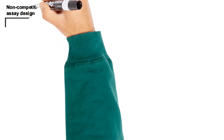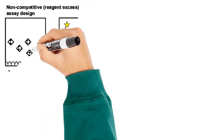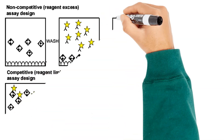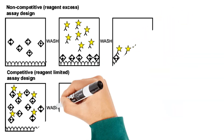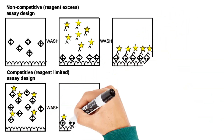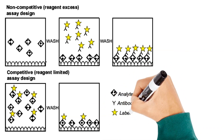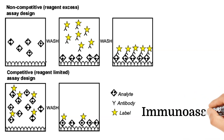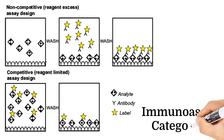Immunoassays can be classified into two main categories: competitive and non-competitive. In competitive immunoassay, a known amount of labeled antigen competes for limited binding sites, and the signal is inversely proportional to the analyte concentration. In non-competitive immunoassay, only antigens from the sample are present, and the signal is directly proportional to the analyte concentration.